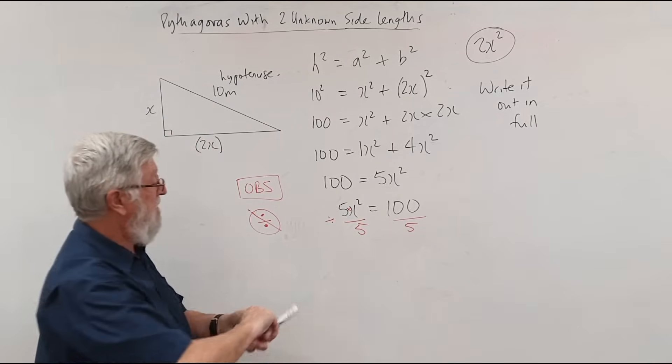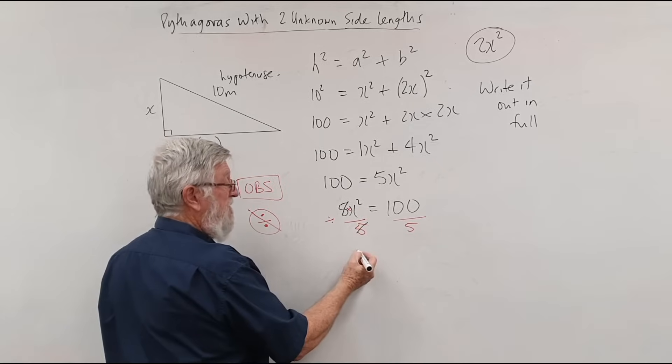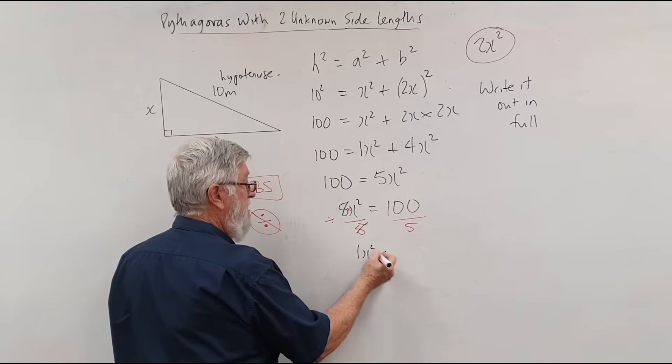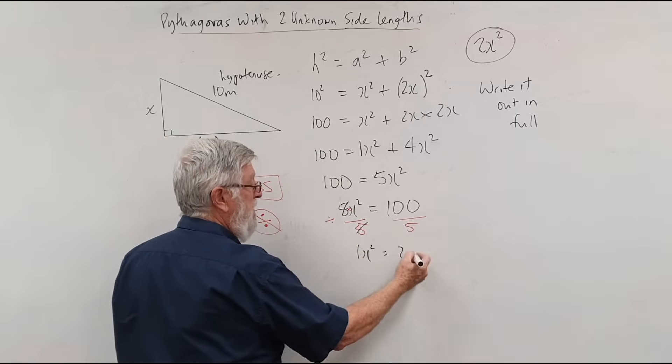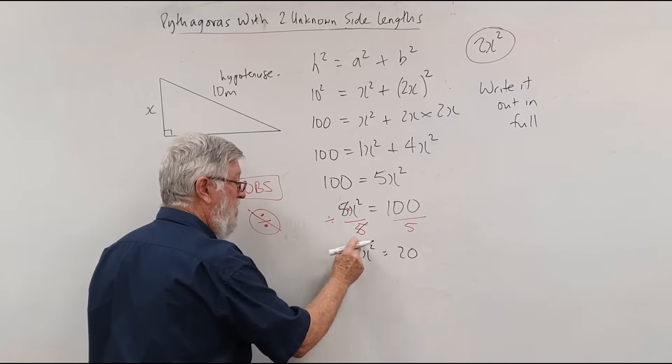Let's have a look what we've got now. 5 into 5 goes once. So if I wanted to, I could write 1x squared. And 5 into 100 goes 20.